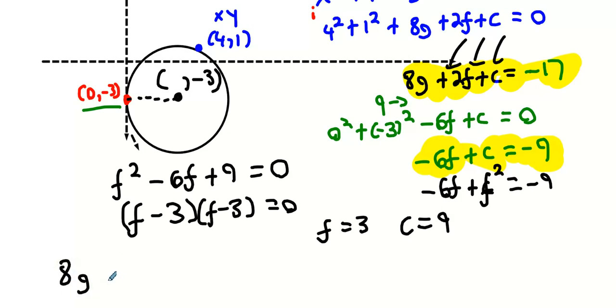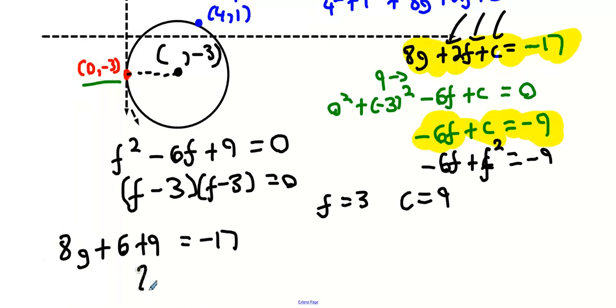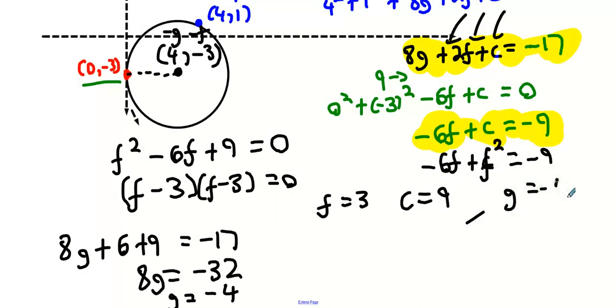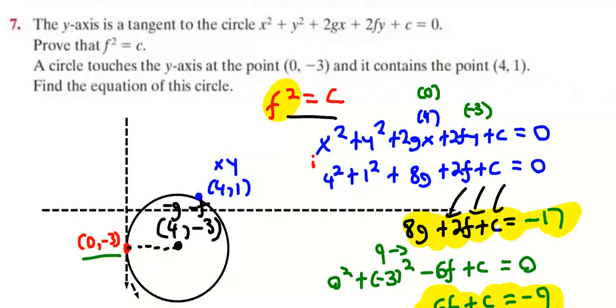Now, f equals 3, and then f squared equals c. So what does that mean for c? c equals 9. And there's one last equation we need. This one here. So what are we going to do with this one? 8g, 2 times f is 2 times 3, which is 6, c is 9. That's minus 17. It's going to be minus 32 divided by 8, minus 4. And remember, the center of the circle is minus g minus f, 4 minus 3. What does the question actually want from me again? What's the equation of the circle? Fill it in to the equation. x squared plus y squared plus 2gx minus 8x, 2fy 6y, plus c 9 equals 0.